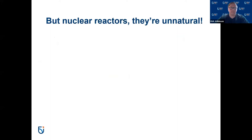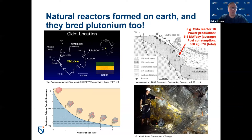A lot of people say nuclear reactors are unnatural — well, that's wrong. A couple of billion years ago here on Earth, specifically in Africa at a place called Oklo, there were natural reactors that actually had fissions and even bred plutonium. They were producing power perhaps of megawatts per day and making lots of fission products — the wastes people talk about nowadays. We don't seem upset that waste was made naturally, but we do get upset that waste is made in a controlled manner in a reactor plant.